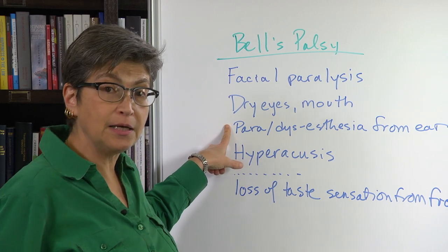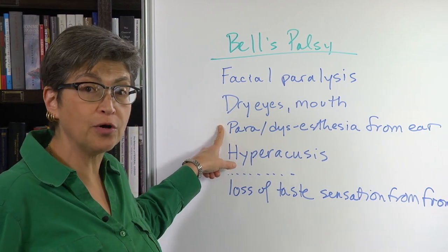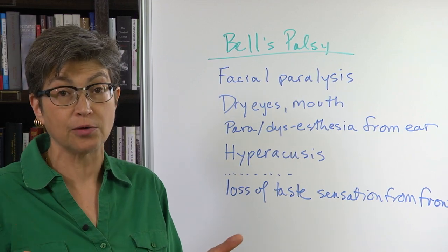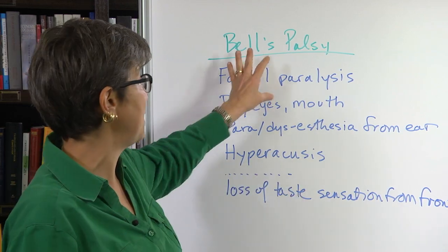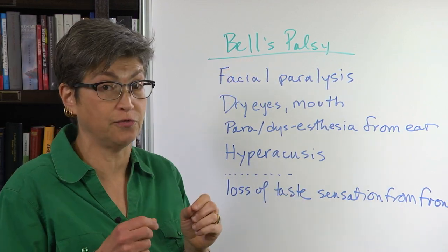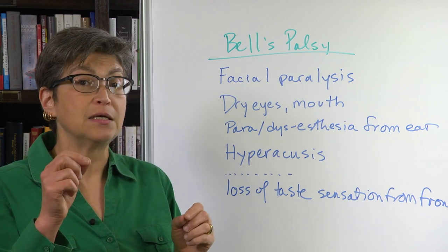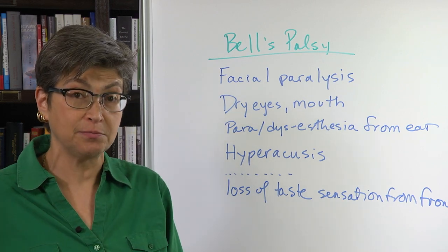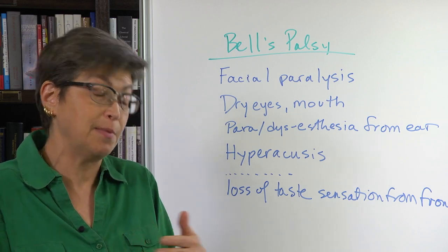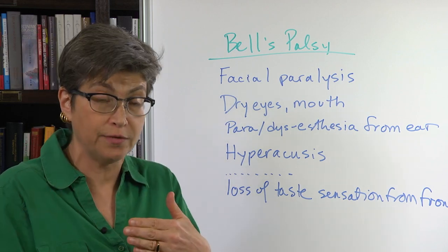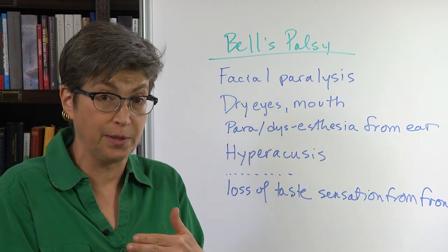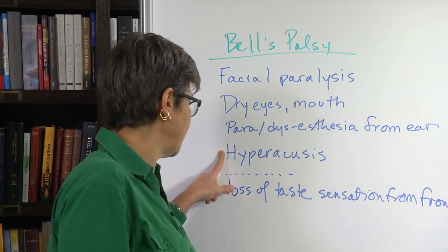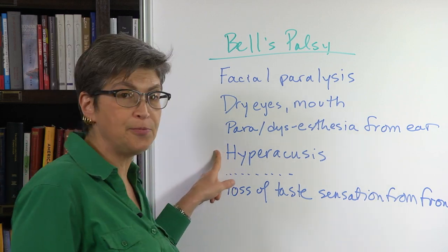There'll be a paresthesia or dysesthesia from the ear, because there's a somatosensory component to the facial nerve. That may precede the rest of these symptoms, or it may not, but it is going to be one of the signs of Bell's palsy. Now, there's also a term called hyperacusis.